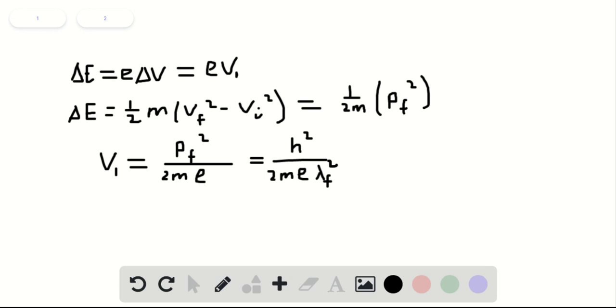Planck's constant is 6.63×10^-34, the electron mass is 9.11×10^-31 kg, and the electron charge is -1.6×10^-19 coulombs. Plugging these values in, we find that V1 equals -150 volts.